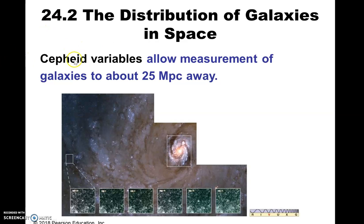The next rung is using variable stars — Cepheid variables and also RR Lyrae variables. Cepheid variables have a period of several days up to more than 50 days, whereas RR Lyrae variables have much shorter periods — sometimes just a number of hours to vary. Using variable stars — and we see variable stars all —